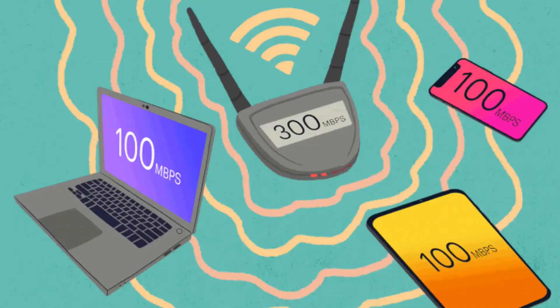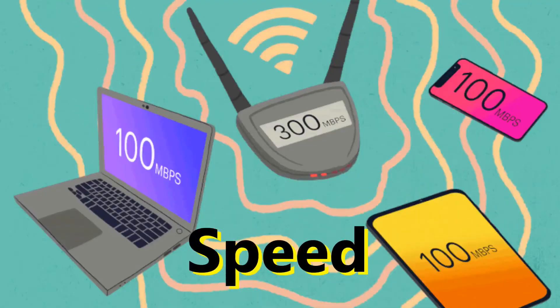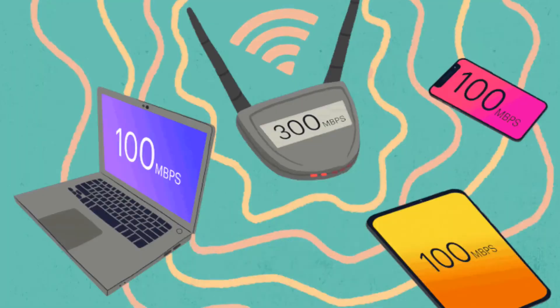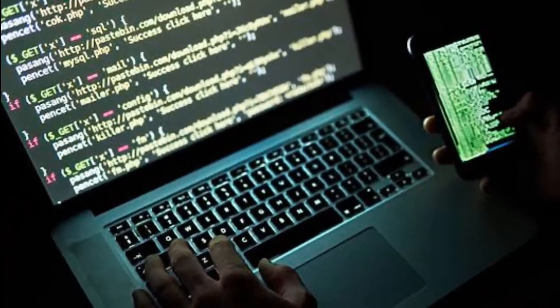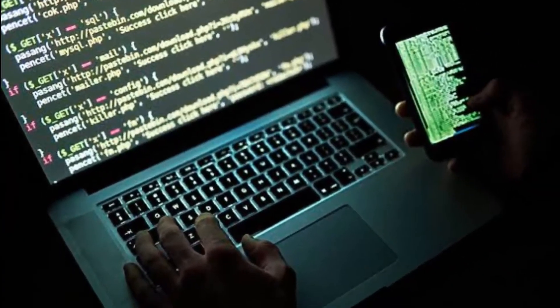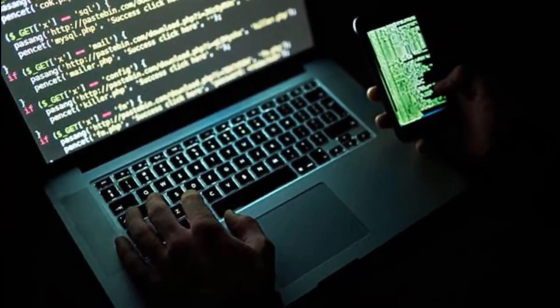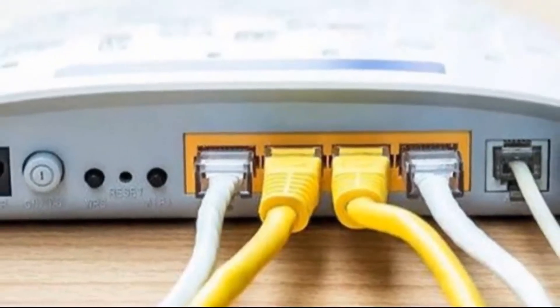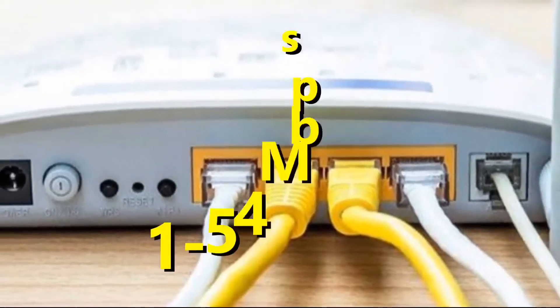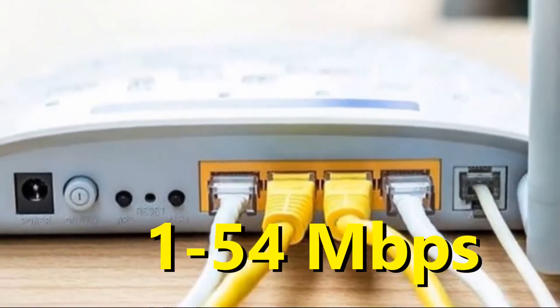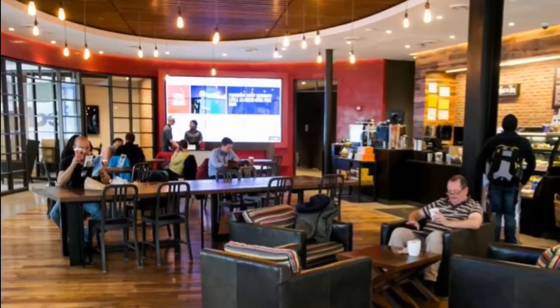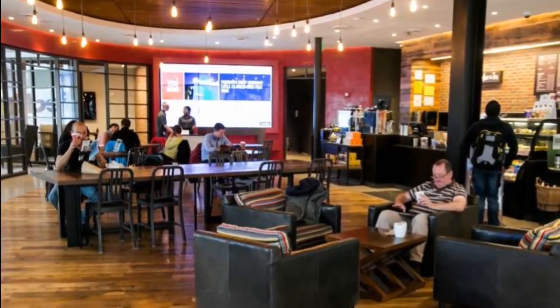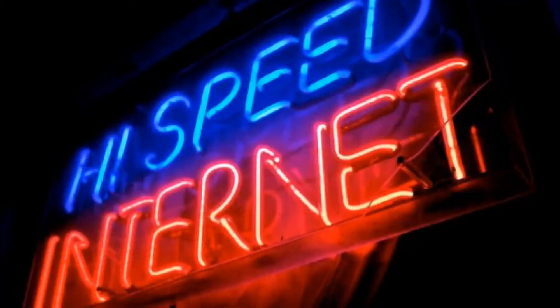Now let's see disadvantages of Wi-Fi. First is speed. The speed of wireless network is far slower than wired network. The slowest wired network has a speed of 20-100 Mbps, where normal Wi-Fi has a speed of 1-54 Mbps. But in some specialized environments speed is critical and hence wired network is used there.